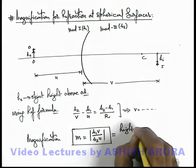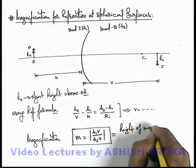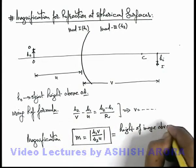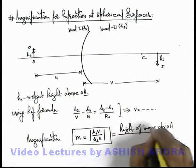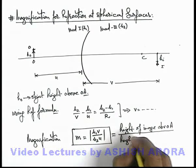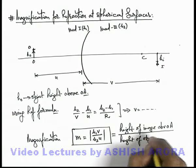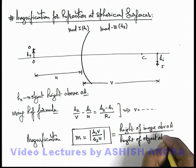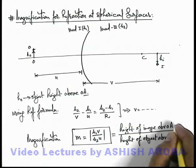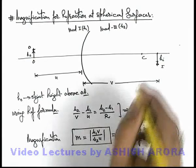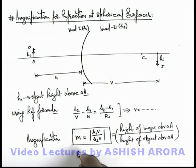...height of image above optic axis divided by height of object above optic axis. This is the way how magnification is defined, so in this situation height of image we can write m times the height of object.